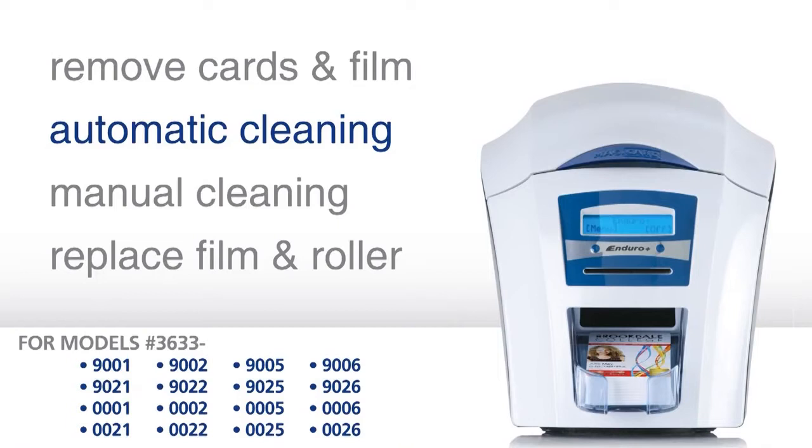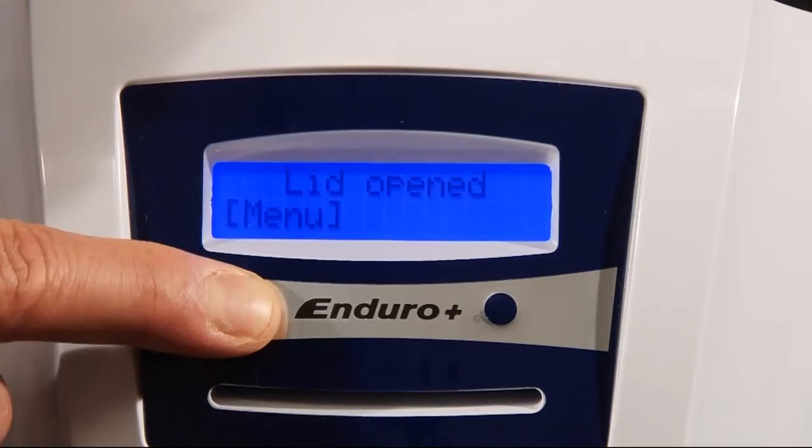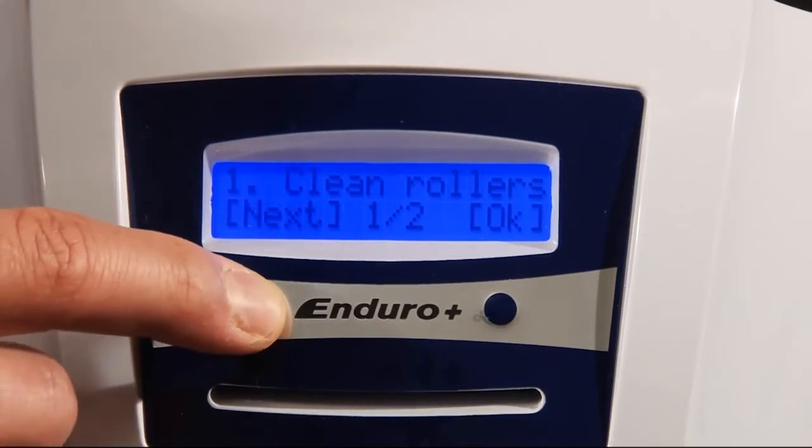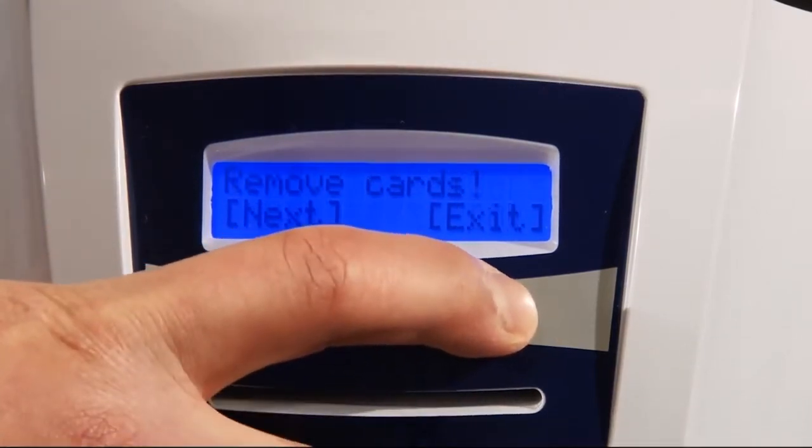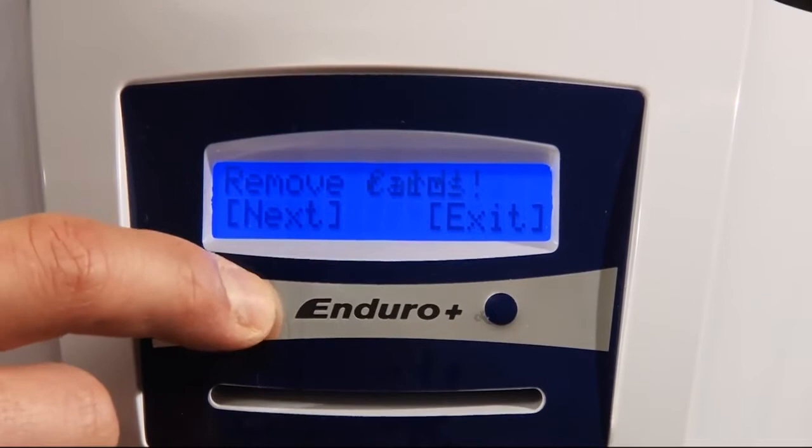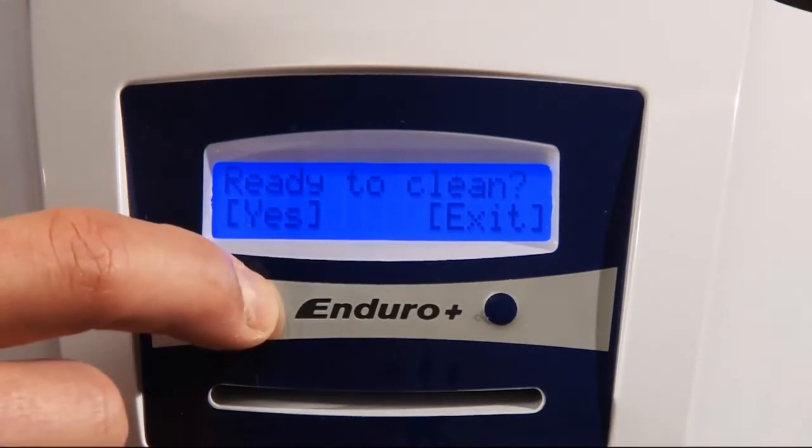Next, clean the printer using the automatic cleaning mode. Use the menu on the front of the printer and navigate to the clean rollers option. Use the keys to work through the guidance messages, ensuring your printer is ready for cleaning.